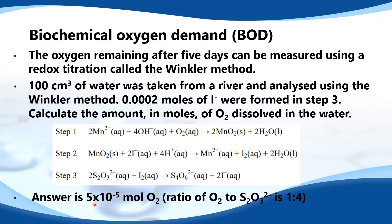The answer is 5×10⁻⁵ moles of O₂. That's because the ratio of oxygen to the thiosulfate ion is a 1 to 4 ratio. In step 3, the number of moles of the thiosulfate ion is the same as the number of moles of the iodide ion. Therefore you divide the number of moles of the iodide ion by 4 to get 5×10⁻⁵, which equals the moles of oxygen.